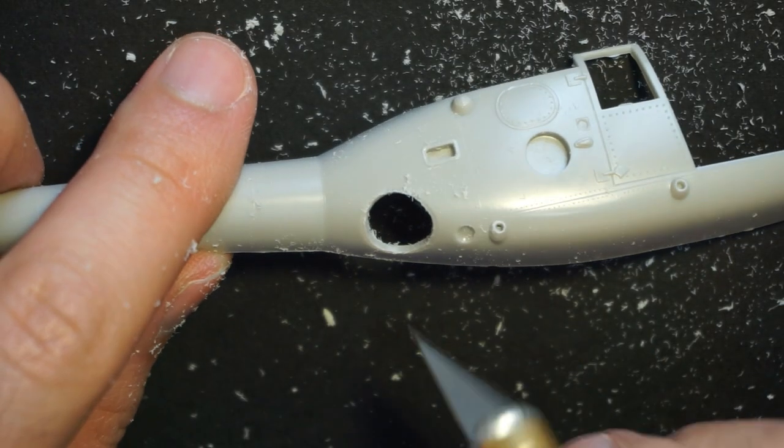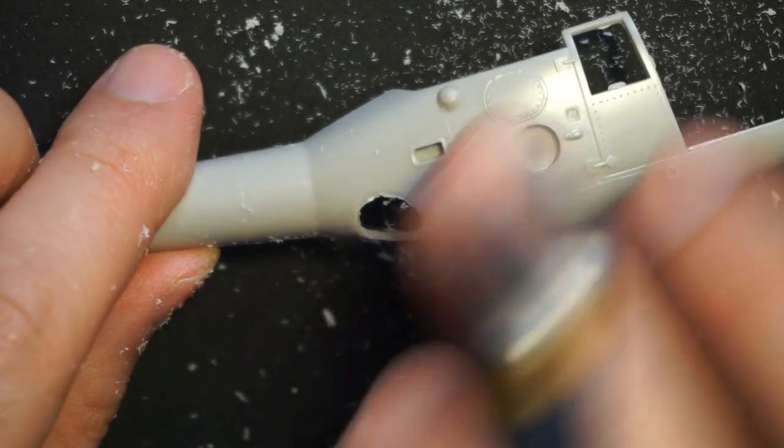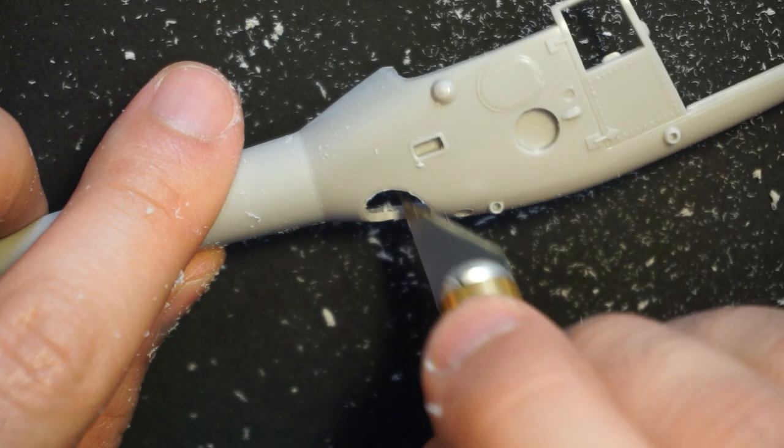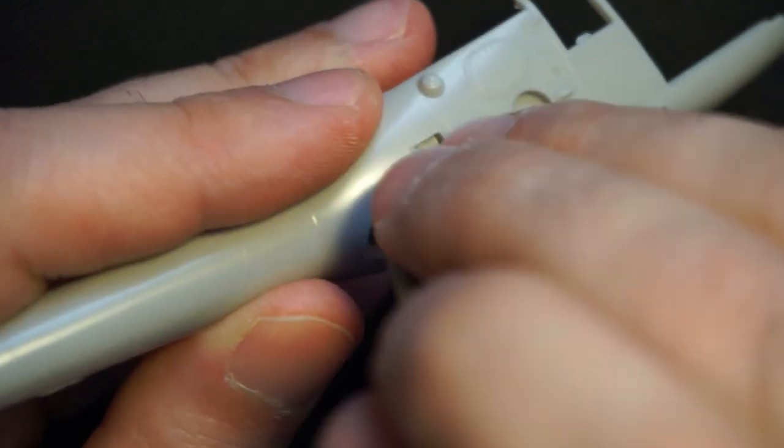A sharp cutter is handy for getting rid of the sticking plastic parts. And finally, I used a rounded file to smoothen the edges.